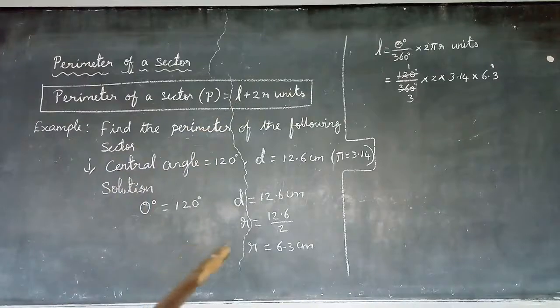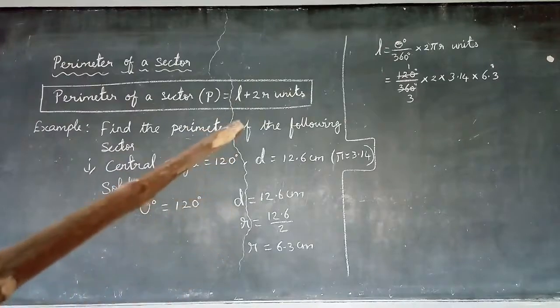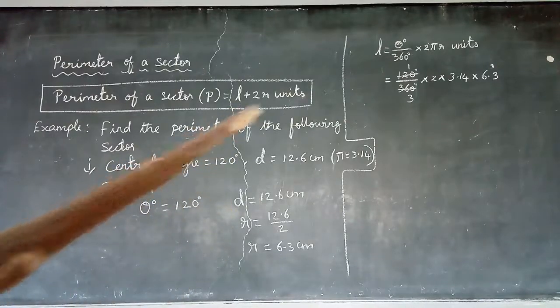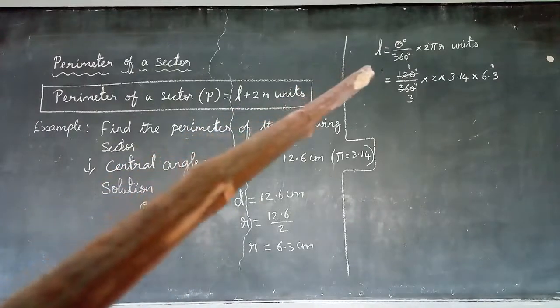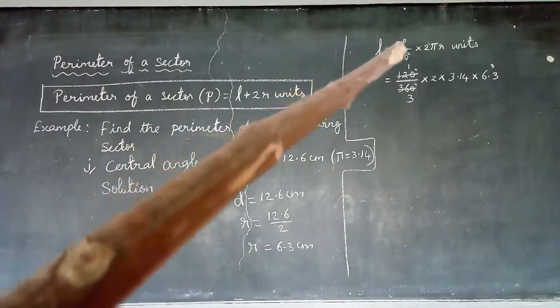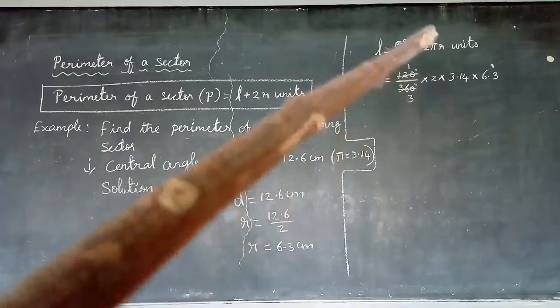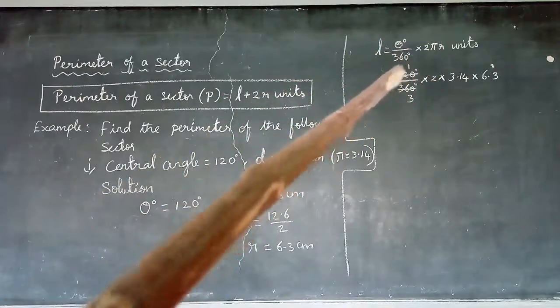Now we need to find the length of the arc. We use the formula: L = (θ/360) × 2πR.